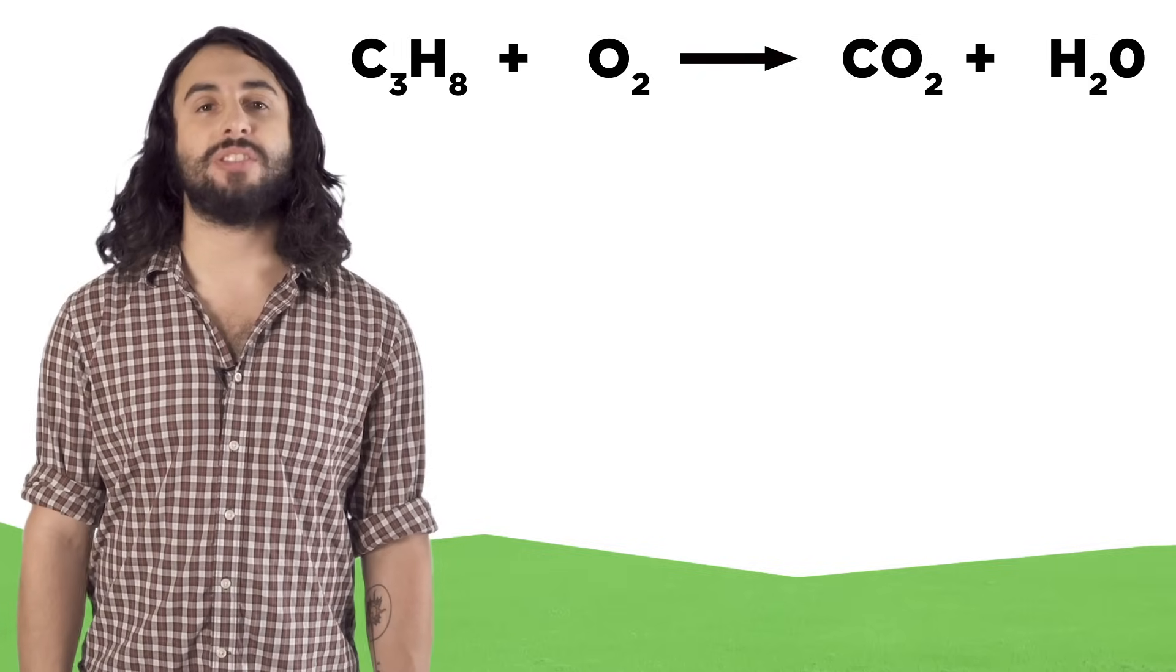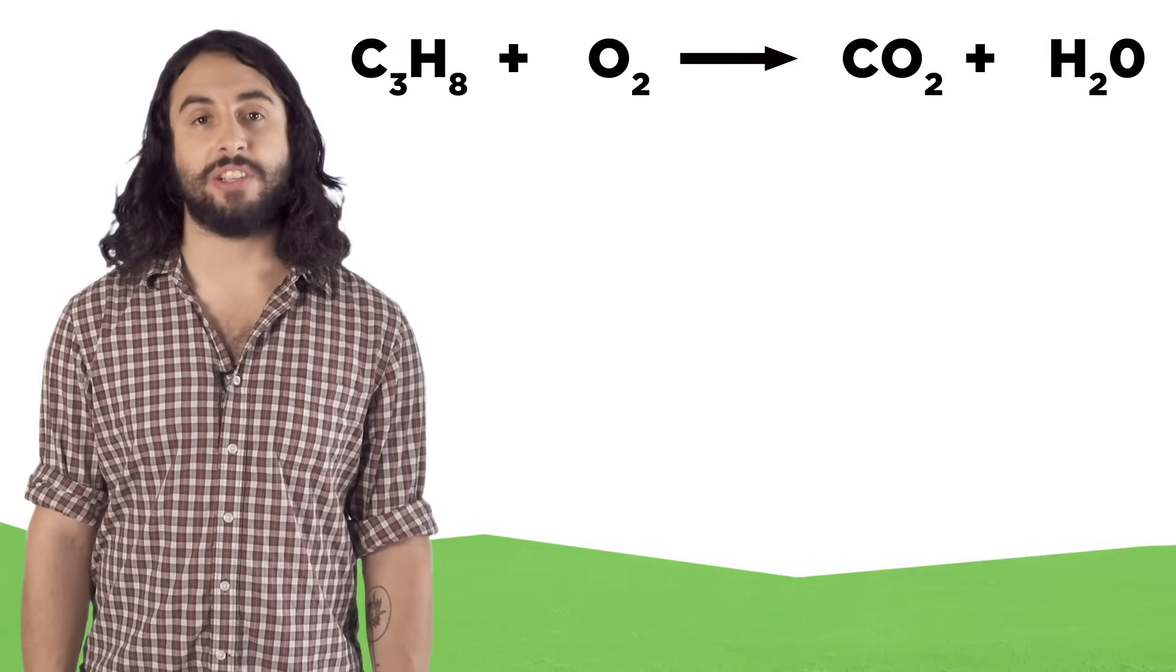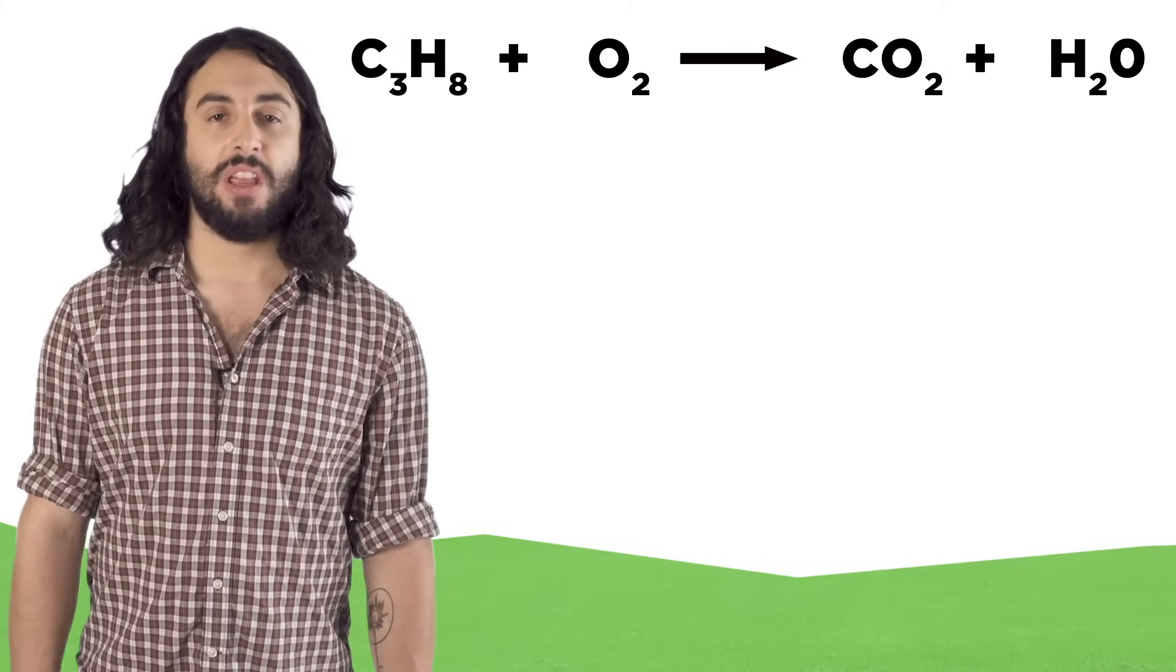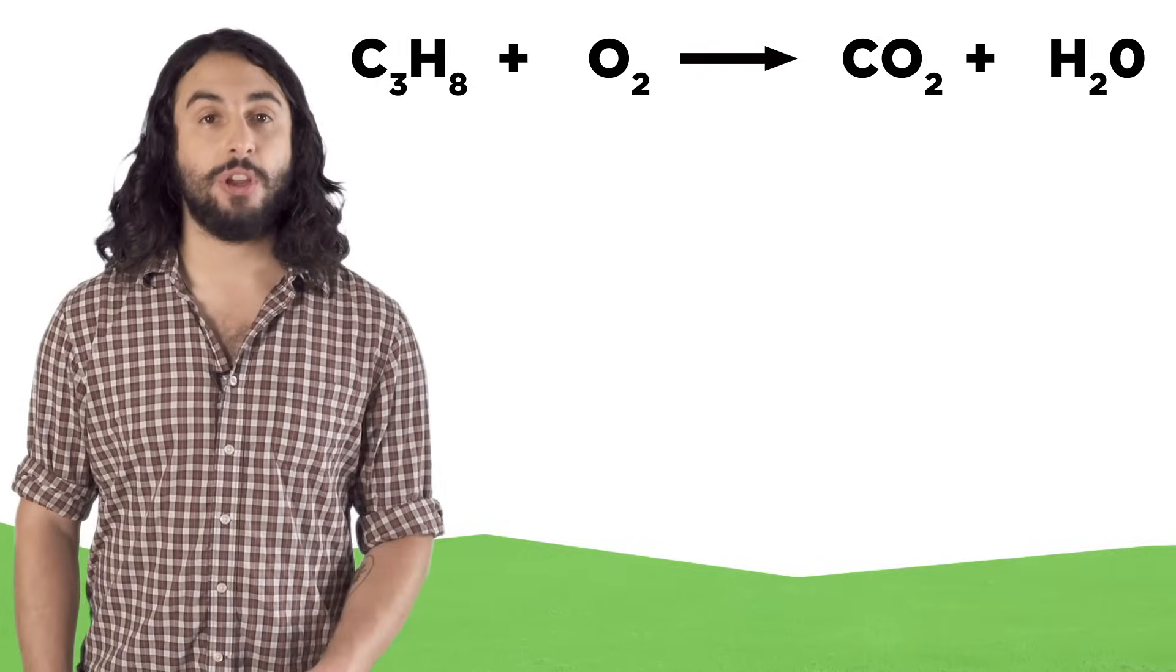So if we have an unbalanced equation like this one that we need to balance, there's an easy way to do it. We will balance things one element at a time. If an element exists by itself, do that one last.